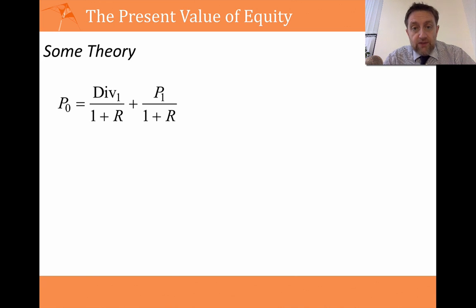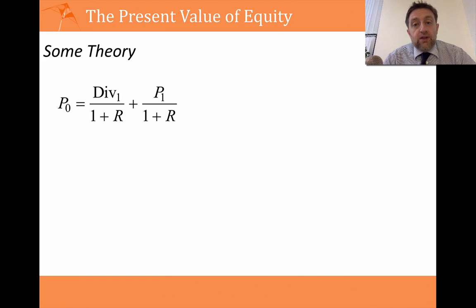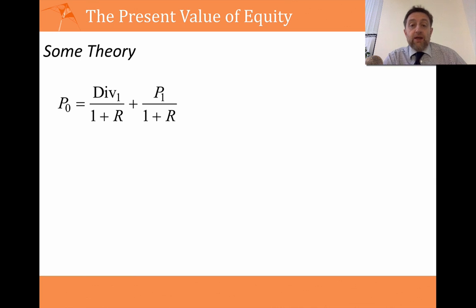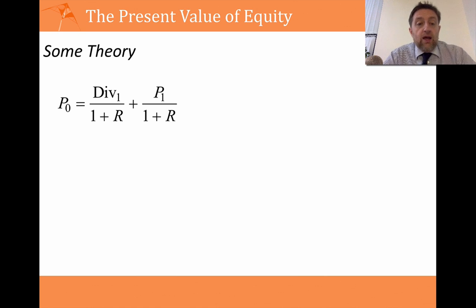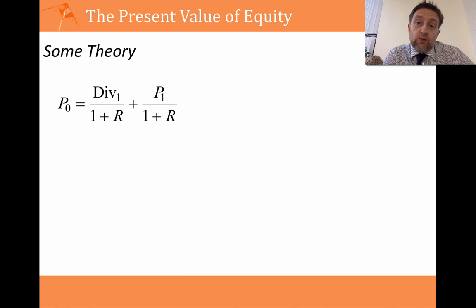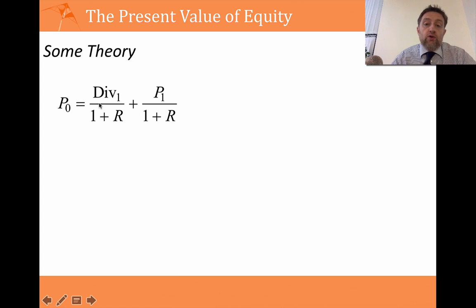During the year you receive a dividend at time one, and you sell the equity at time one. Given that the dividend and the sale price both occur one year from now, we have to discount them back by one plus R, because it's only one period in the future. The sum of the discounted value of the dividend plus the discounted value of the price you get must equal the price today. So P0 equals that formula.